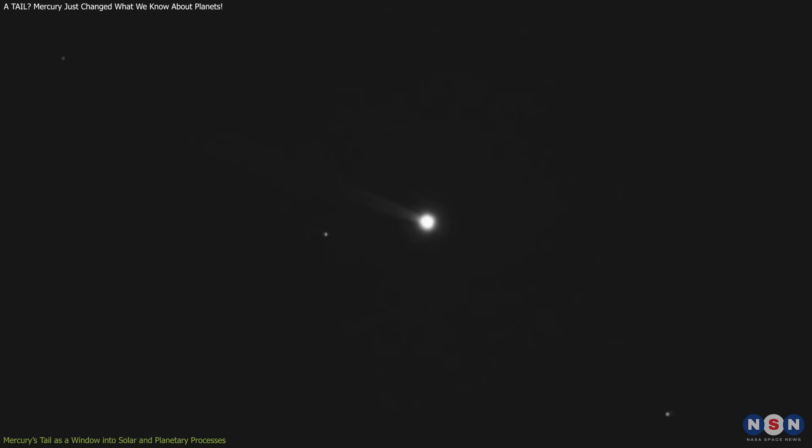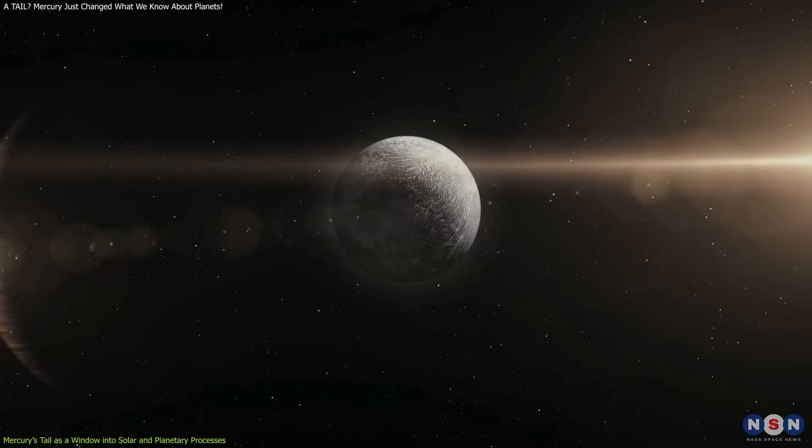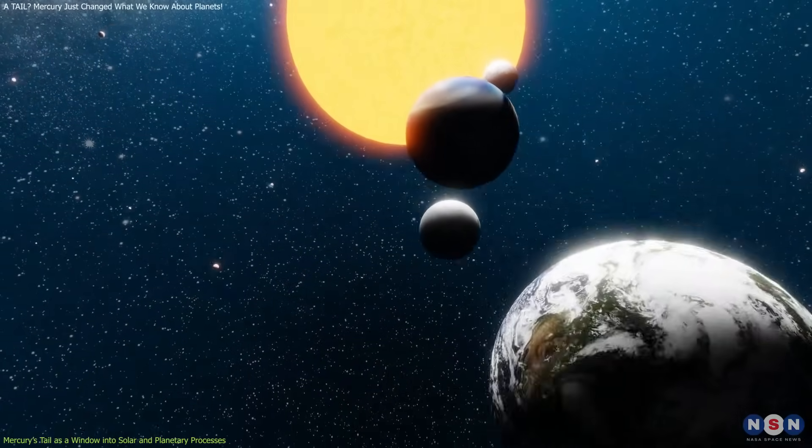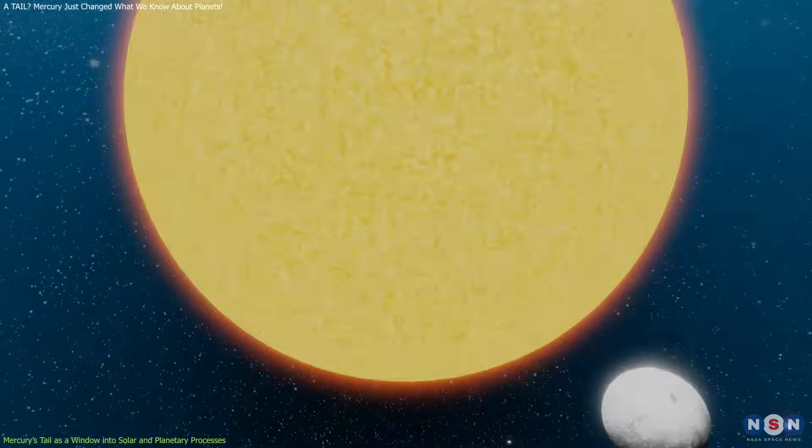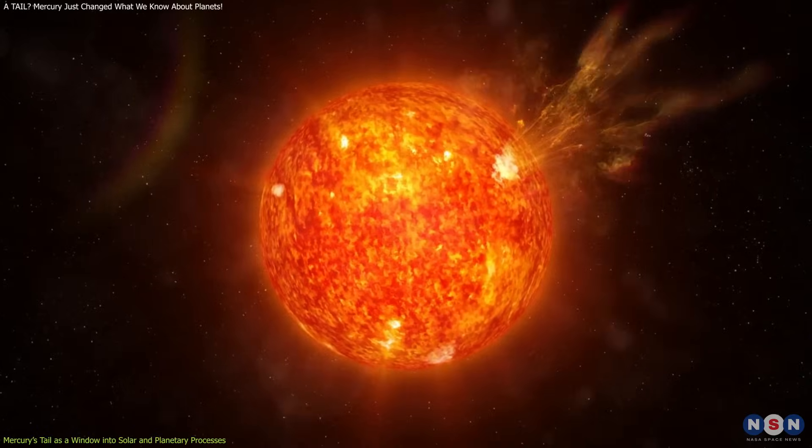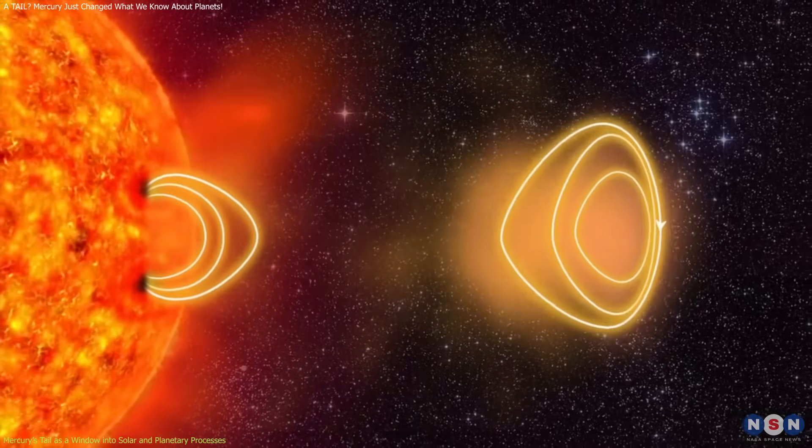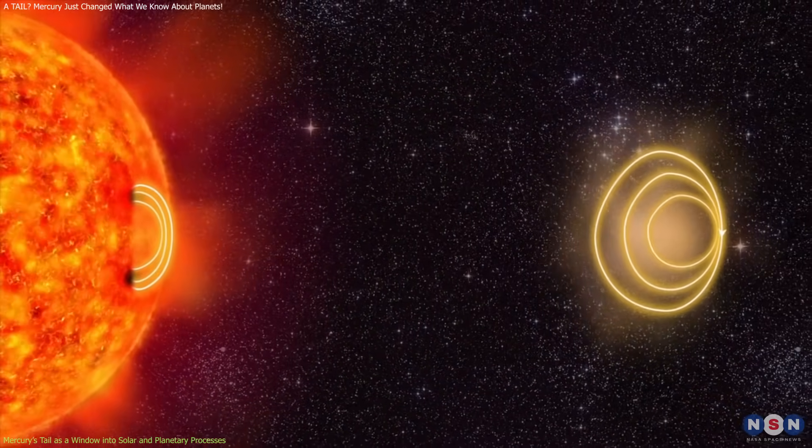To understand the significance of Mercury's sodium tail, we need to delve into the invisible forces that shape it and what this means for planetary science. The sodium tail isn't unique to Mercury. It serves as a case study for how planetary surfaces interact with space environments, especially in extreme conditions near a star. The solar wind, a stream of charged particles, mainly electrons and protons flowing outward from the sun at up to 800 kilometers per second, plays a crucial role.